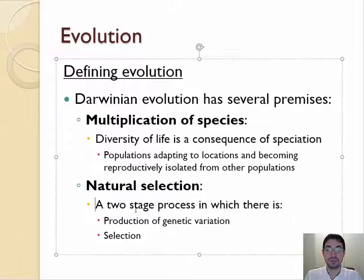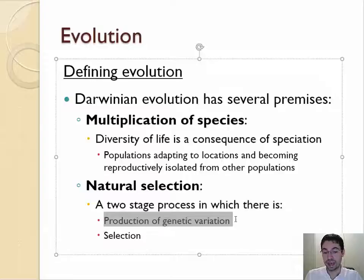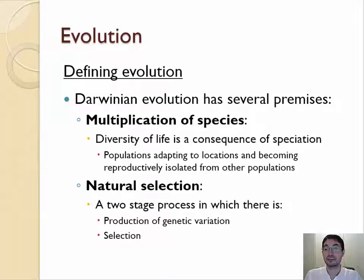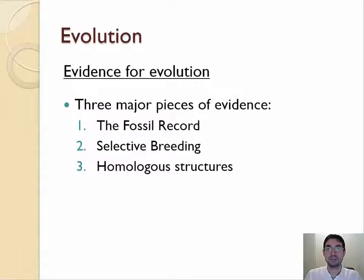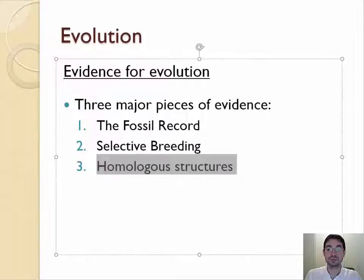And finally, he said this happens because of natural selection, which is natural because there's variation and then nature selects which ones survive. That's natural selection. So three main pieces of evidence for evolution are fossils, selective breeding, and homologous structures.